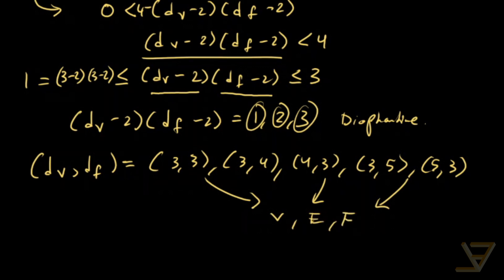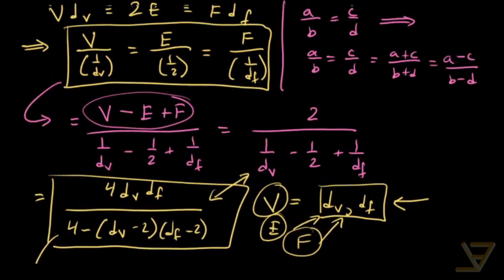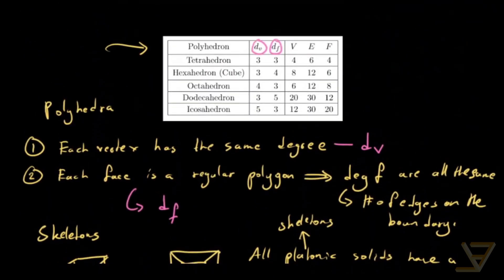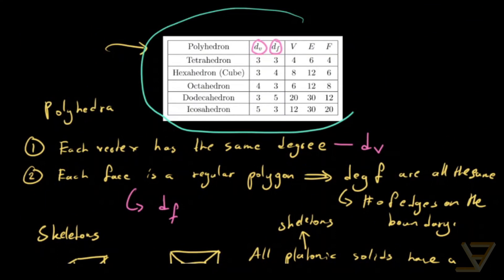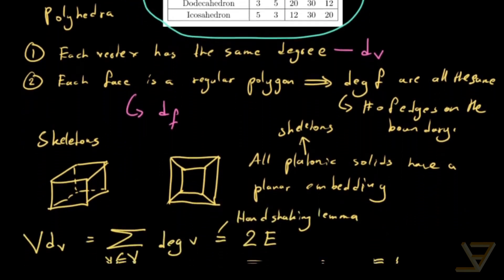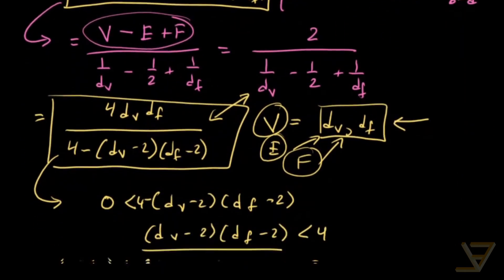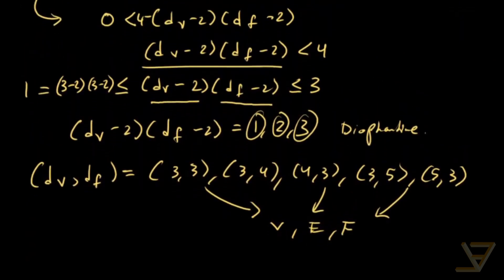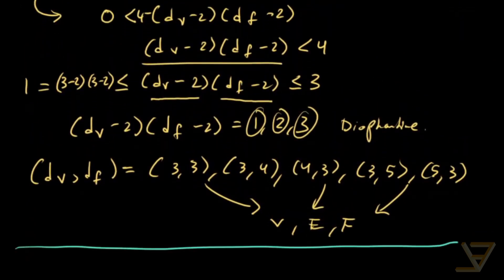So take a look at the table that I pasted before. This table shows all the possibilities. So there are at most five platonic solids. And by geometric construction we can prove that they all exist in 3D. Thanks for watching and I'll see you next time.